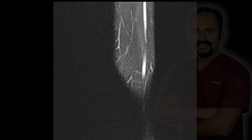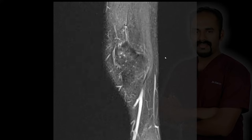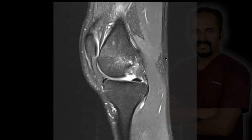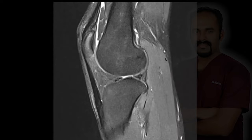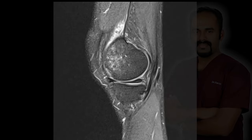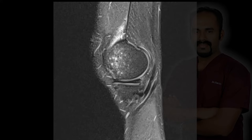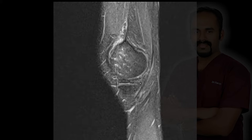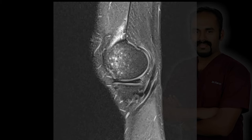24-year-old male to rule out internal derangement of the knee. Sagittal PD fat-saturated images starting from the medial aspect going towards the lateral side. The anterior horn and the posterior horn of the medial meniscus appear relatively preserved. Just in the periphery of the posterior horn there's a little bit of high signal intensity, but no obvious signal changes extending to either of the articular surfaces.